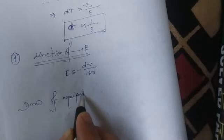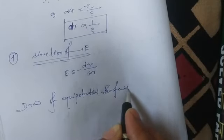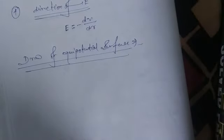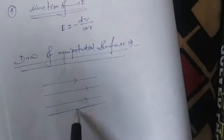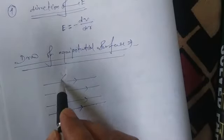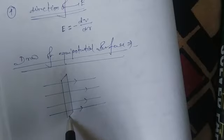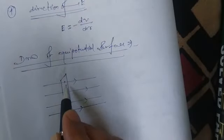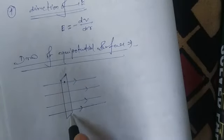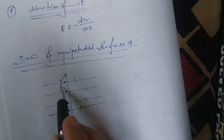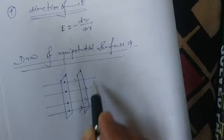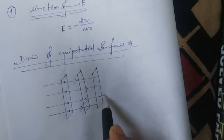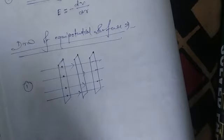For a uniform electric field, the equipotential surfaces are planes perpendicular to the field direction. Within such a surface, the potential at each and every point is the same because it is a uniform field. So one plane is one equipotential surface, another parallel plane is another equipotential surface, and so on.